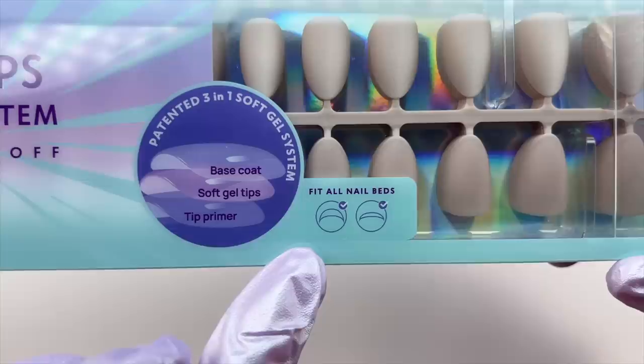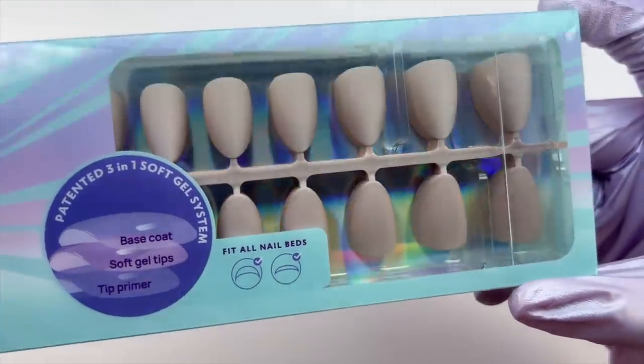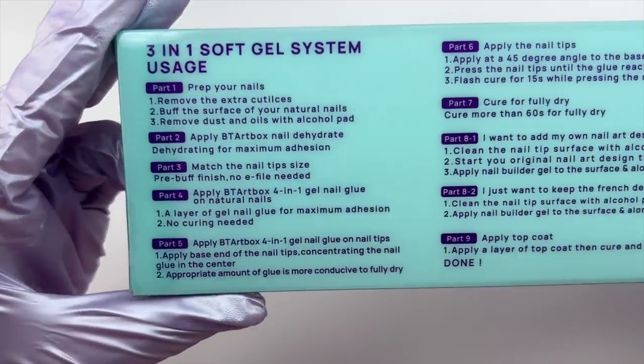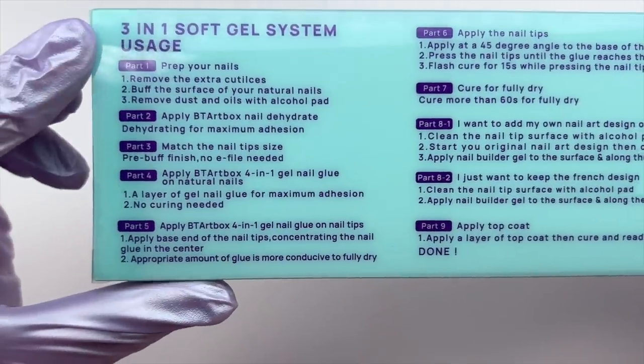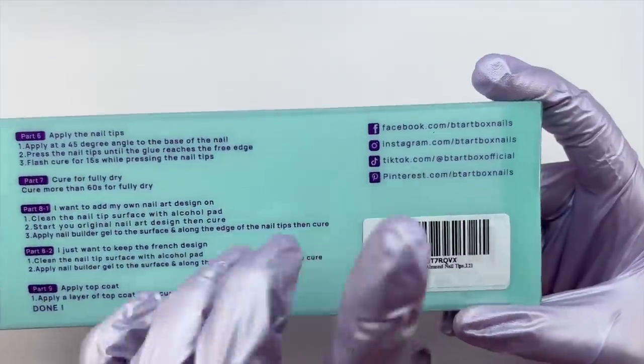These specific nail tips can be purchased from Amazon. They can also be purchased from the BT Art Box website. There are also kits available as well, so if you want to get the entire kit, you can choose to do that or you can also just purchase the individual nail tips like I'm showing here today.